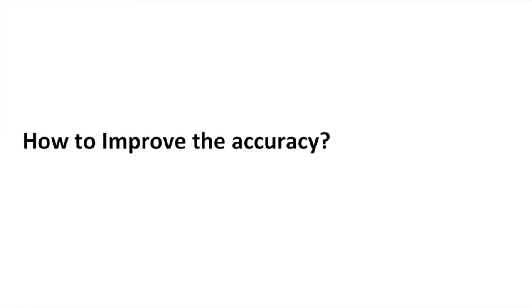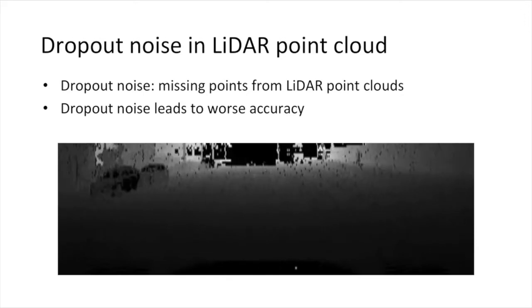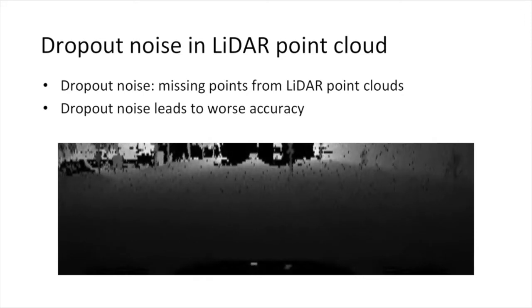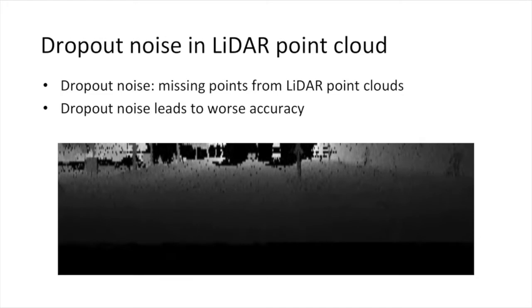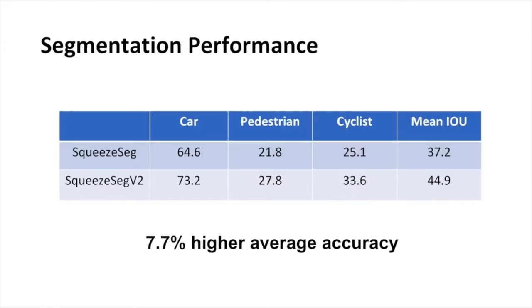So how do we improve the accuracy? LiDAR point cloud contains a lot of dropout noise, or missing points. Dropout noise can lead to worse accuracy of the model. To solve this, we propose a context aggregation module to increase the robustness of the model to dropout noise. Adding this module, our model achieved 7.7% higher accuracy.